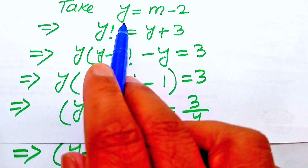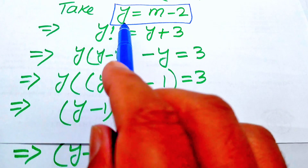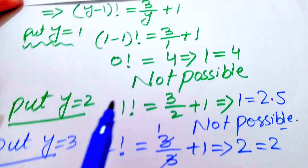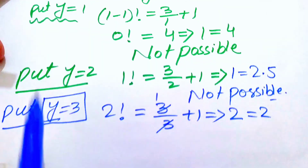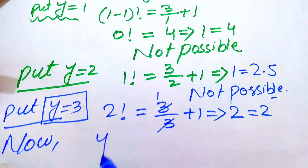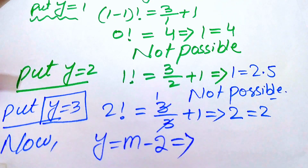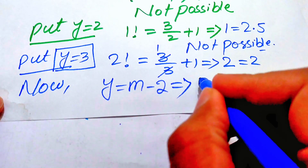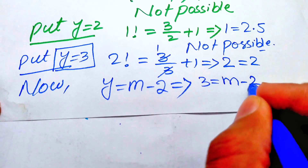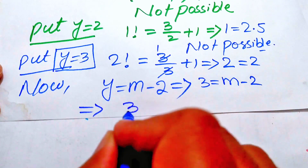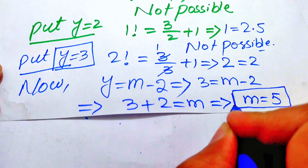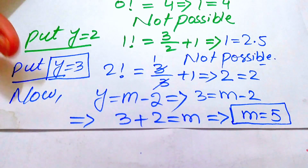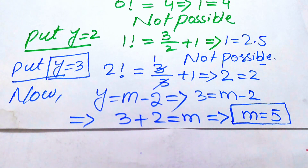We back-substitute the value of y. Since y equals m minus 2 and y equals 3, we get 3 equals m minus 2, so m equals 3 plus 2, which gives m equals 5. Therefore m equals 5 is the solution of the given equation. Thank you for watching this video, and please subscribe to the channel Math Olympiad for more exciting videos.